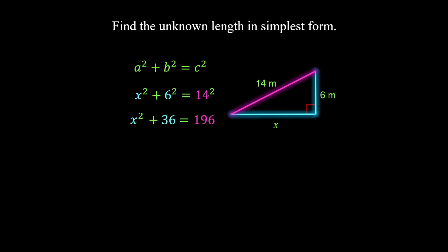To isolate x, first subtract 36 from both sides, leaving us with x squared equals 160. Then square root both sides to undo the squaring operation. Square root of 160 can be simplified by extracting the perfect square factor. Since 16 is a perfect square factor of 160, it simplifies to 4, leaving the remaining factor 10 under the square root. Therefore, x equals 4 times square root of 10 meters.